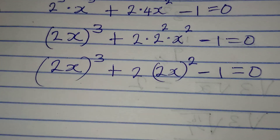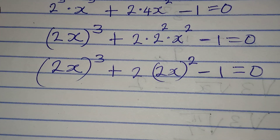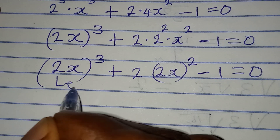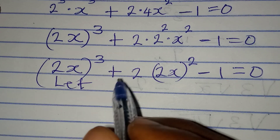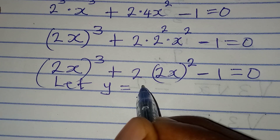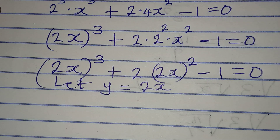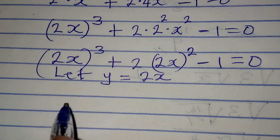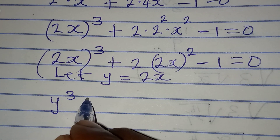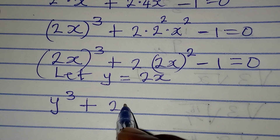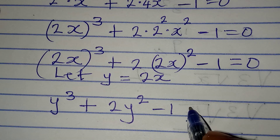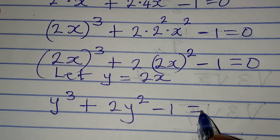Now I have 2x in two places, so let a letter represent 2x. Let's say y equals 2x. So that means I'm going to have y to the power of 3 plus 2y squared minus 1 equals 0.